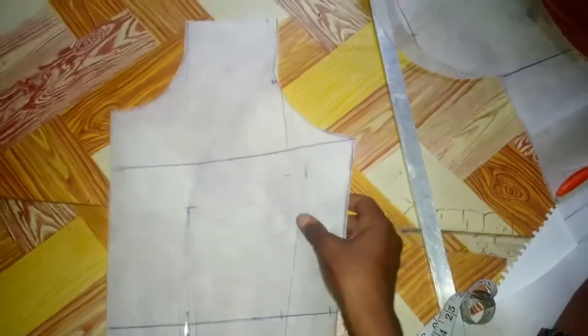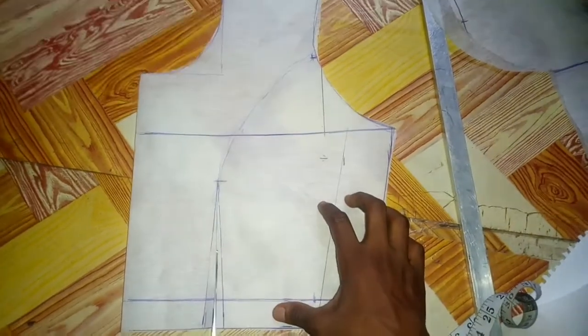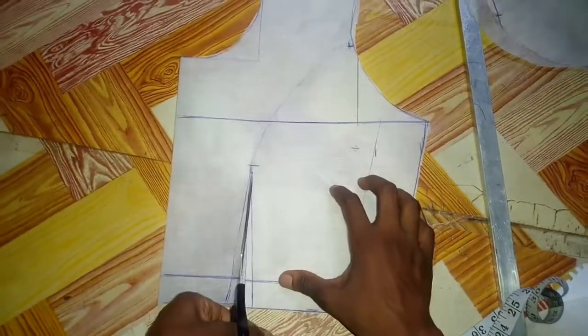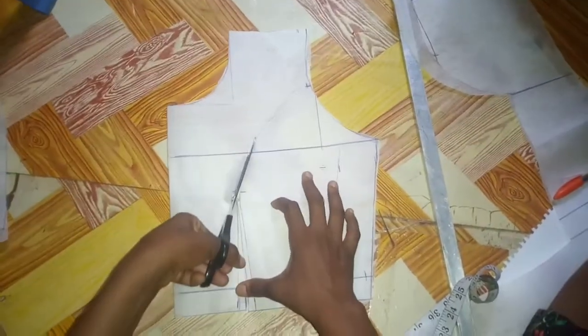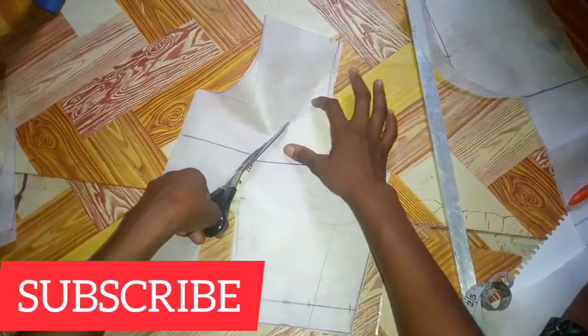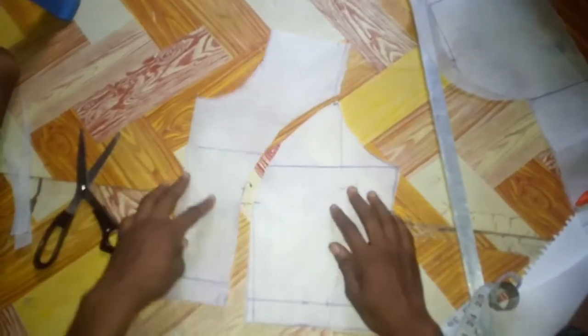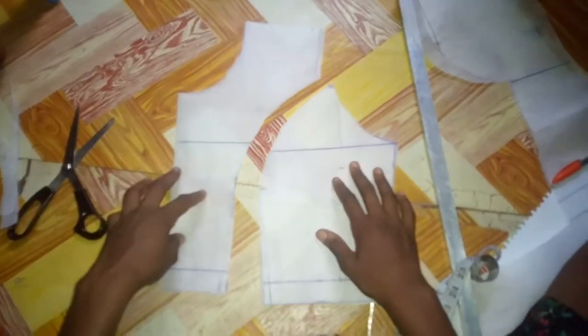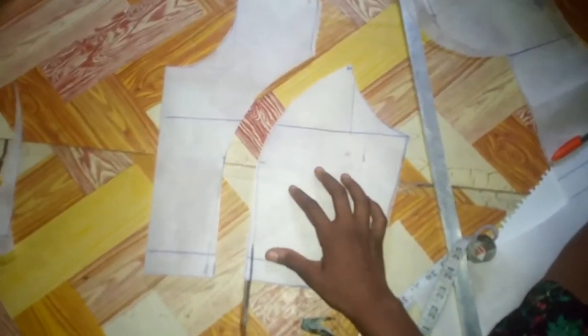So after connecting this, next thing is to cut. So this is what it looks like. I'll be trimming a little bit so that when I sew I won't be getting a puffy result.